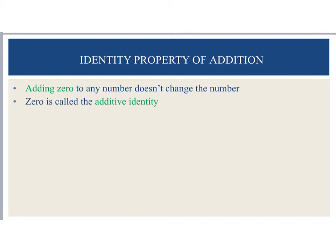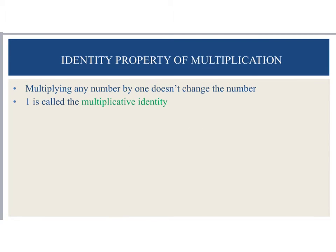Next, we have the identity property of addition. This just says that adding 0 to a number doesn't change that number. That's why it's called an identity. So if I did 7 plus 0, I'm still going to end up with 7. So 7 did not lose its identity. The identity property of multiplication, though, in order to not change the number when we're multiplying, we have to multiply it by 1. So I would have something like 6 times 1. That would give me 6. And this is called the multiplicative identity.